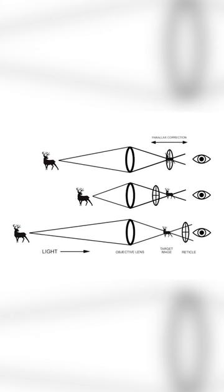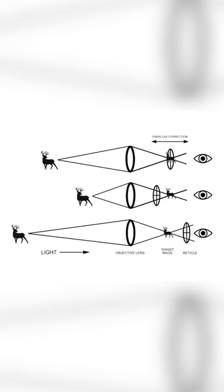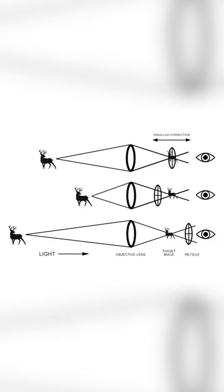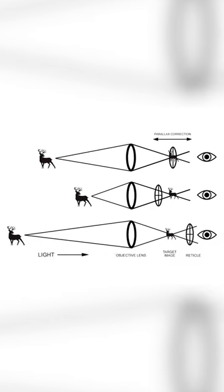What is parallax? Parallax is technically when the target, the reticle, and your eye are not on the same focal plane. A lot of people experience this as an out-of-focus image. You may be looking downrange at the target and notice the target is blurry, or maybe the target is clear and the crosshair is blurry.